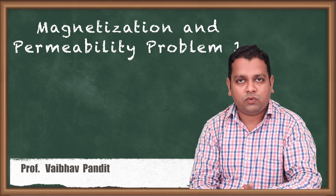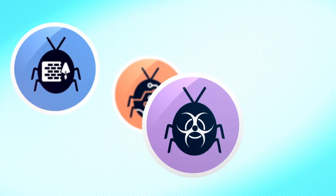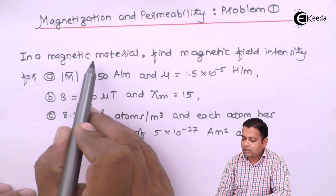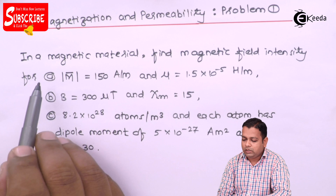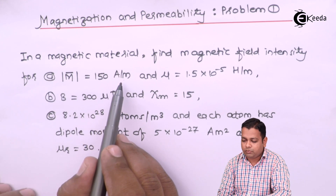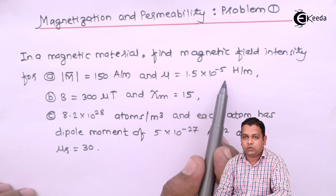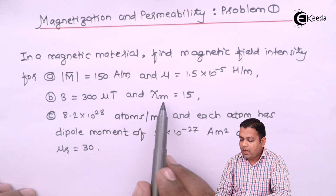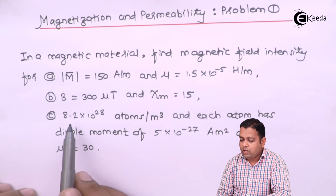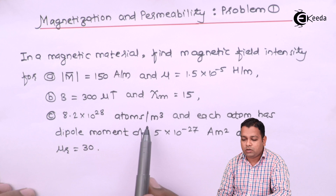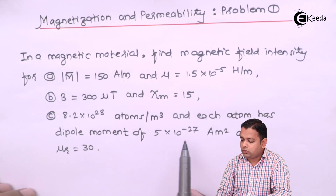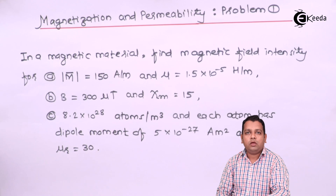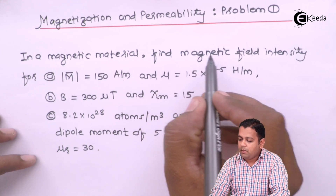Based on this concept, let us take problem number one. In a magnetic material, find magnetic field intensity. We have three parts A, B, and C. In part A, the magnitude of M bar is equal to 150 ampere per meter and mu is equal to 1.5 into 10 raised to power minus 5 henry per meter. In part B, B is given as 300 micro tesla and magnetic susceptibility equals 15. In part C, we have 8.2 into 10 raised to power 28 atoms per meter cube, each atom has a dipole moment of 5 into 10 raised to power minus 27 ampere meter square, and mu r equals 30.